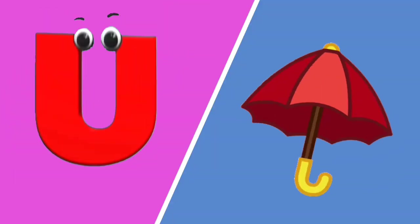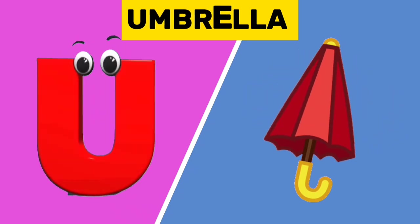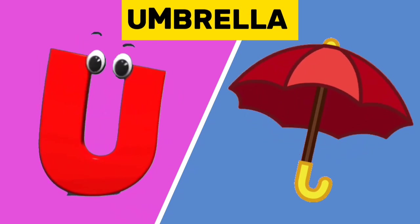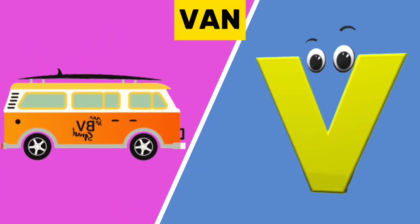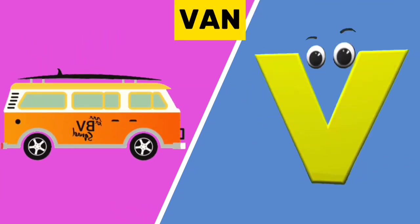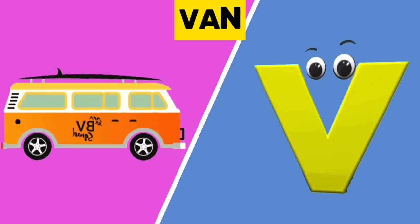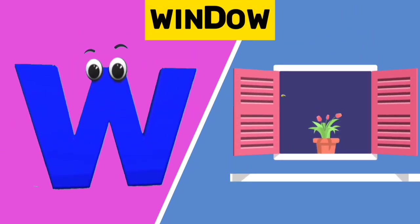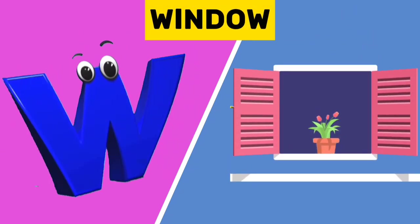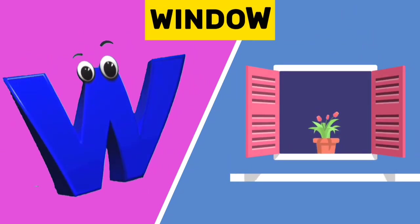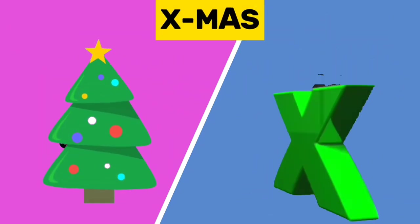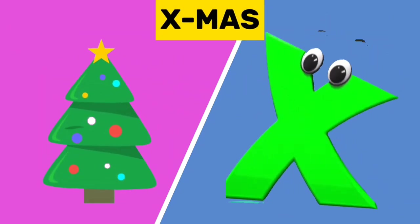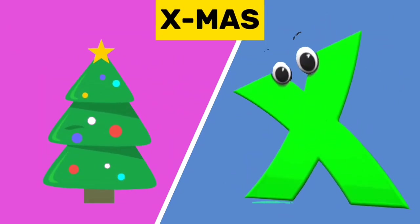U is for umbrella. U, u, umbrella. V is for van. V, v, van. W is for window. W, w, window. And X is for X-mas. X, x, X-mas.